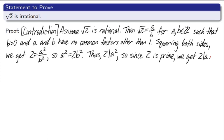Now since 2 divides a, we can use the definition of divisibility to rewrite a. Then a equals 2k for some k in the integers. So, what we'll do is plug that back in to this equation. A squared equals 2b squared. So, 2k all squared is equal to 2b squared.